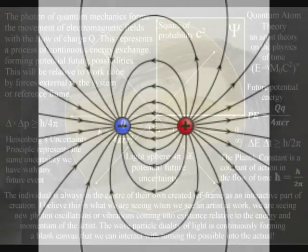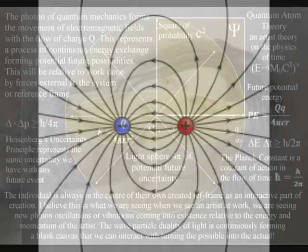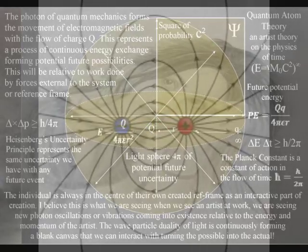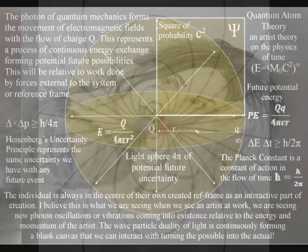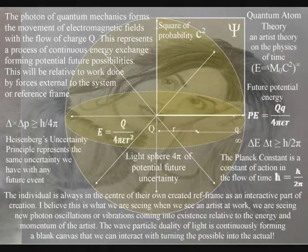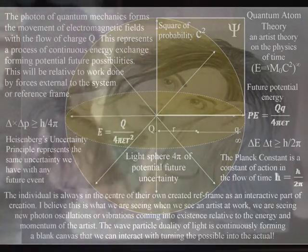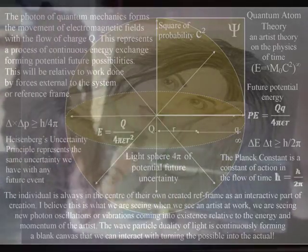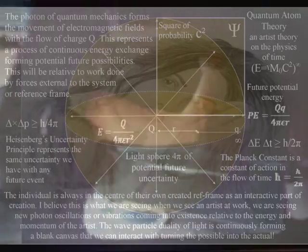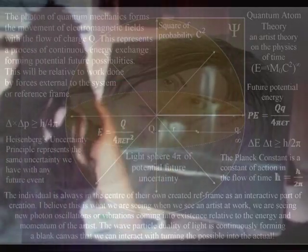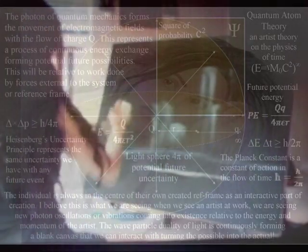The light photon of quantum mechanics is the courier of the electromagnetic force, forming the movement of positive and negative charge with the flow of electromagnetic fields. We see and feel this process of continuous change as the flow of time. In this theory, time is an emergent property, with the future continuously coming into existence light photon by light photon, with each new photon-electron coupling or dipole moment. This is a non-linear theory of time, with an arrow of time or a timeline from the past into the future for each object or individual within their own reference frame.